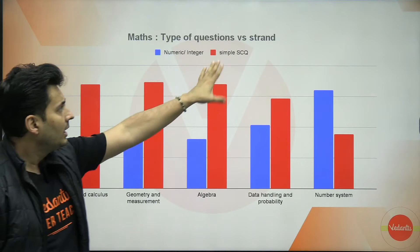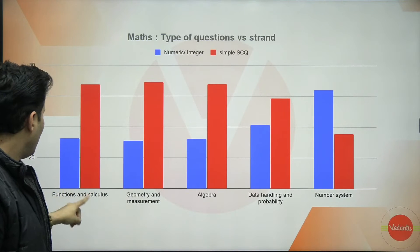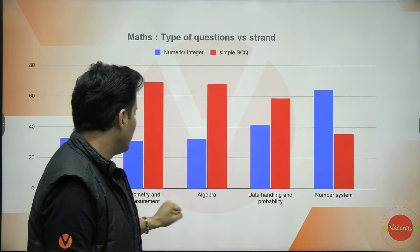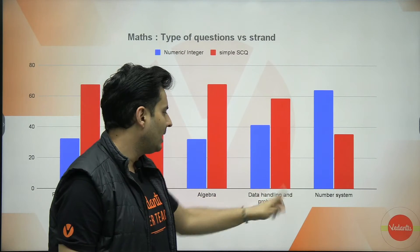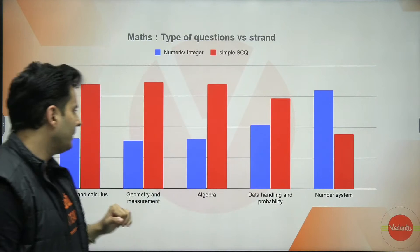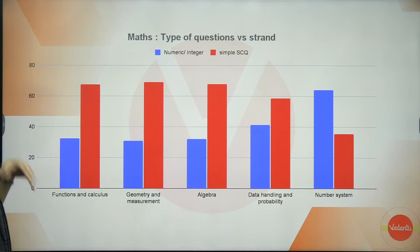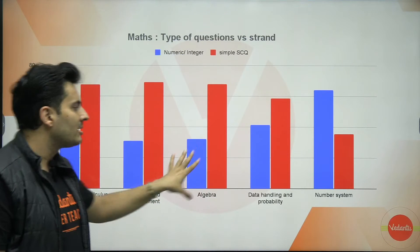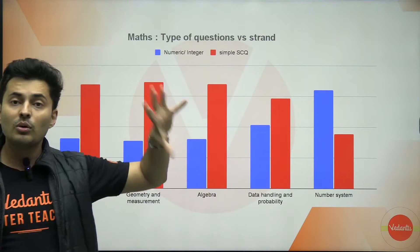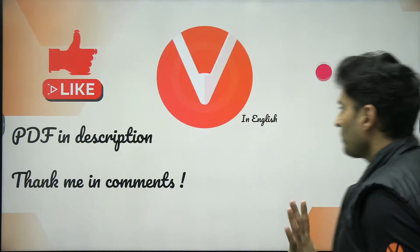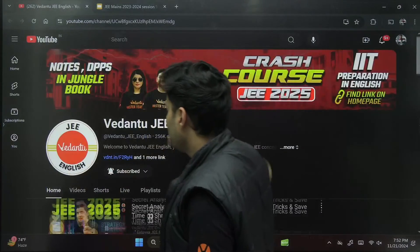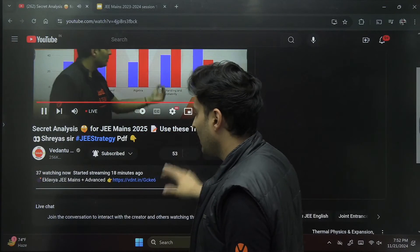For question type patterns in mathematics: single correct questions are asked more from functions and calculus, geometry and measurement, and algebra. You won't see many single correct questions from number systems, but from number systems you'll see more numeric type. Fewer numeric questions are asked from functions and calculus, geometry and measurement, and algebra, whereas more numeric questions come from data handling, probability, and number systems. So you now know which chapters give you marks in which particular question category. All of this analysis is collected in a PDF, with the link in the description box of this video.